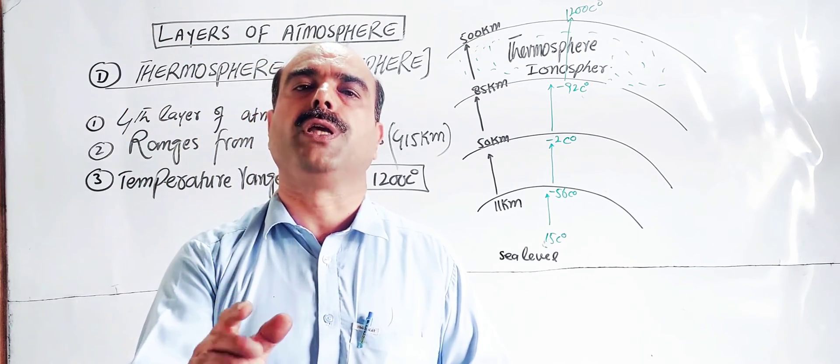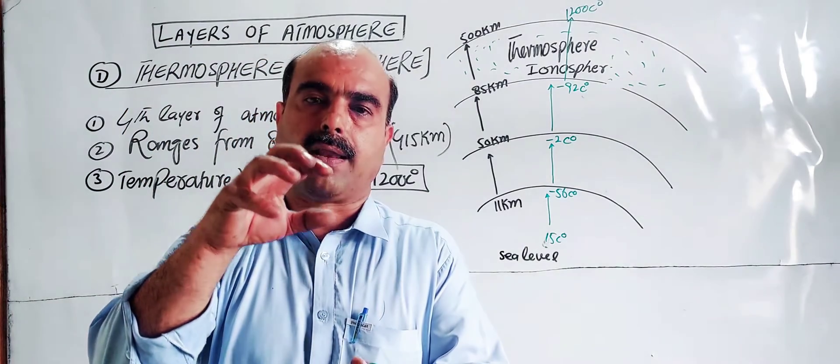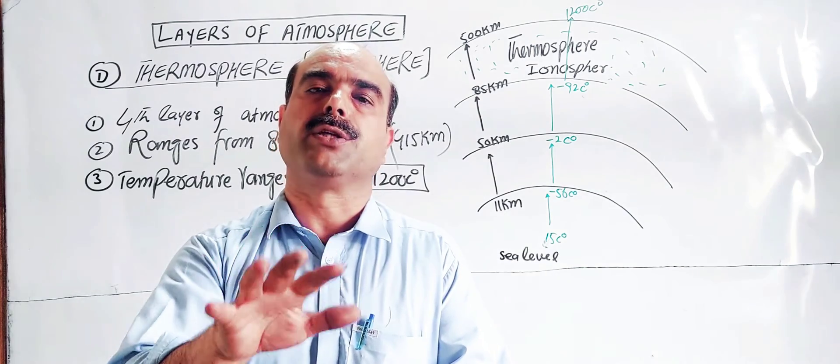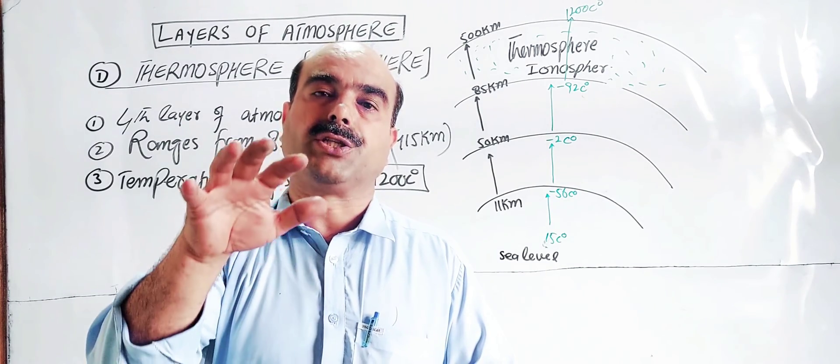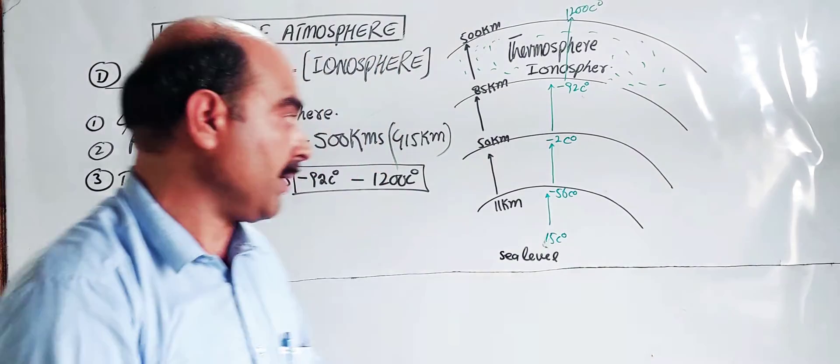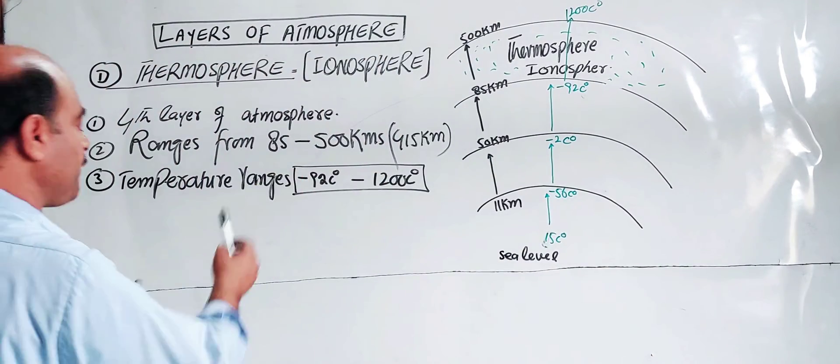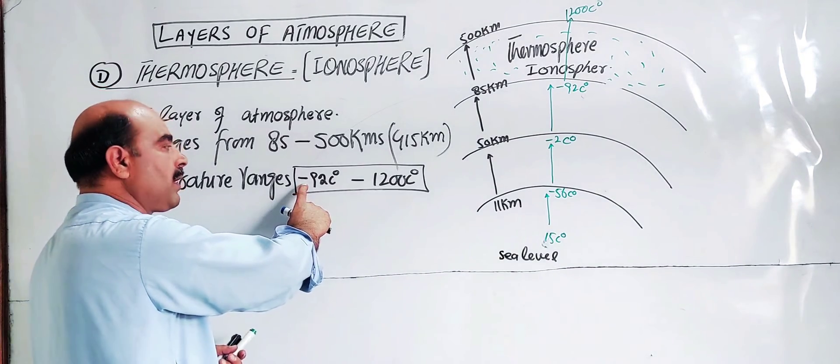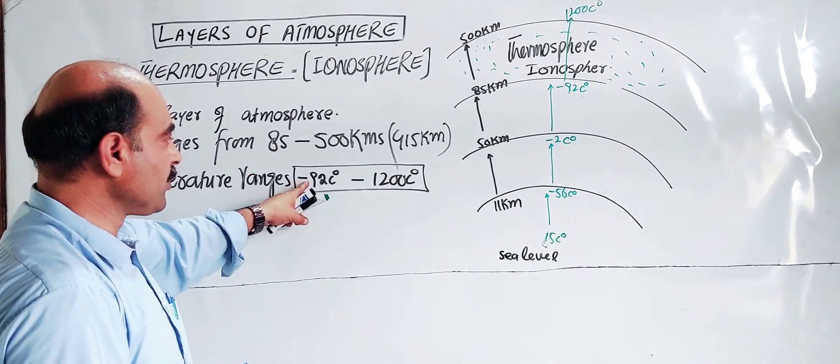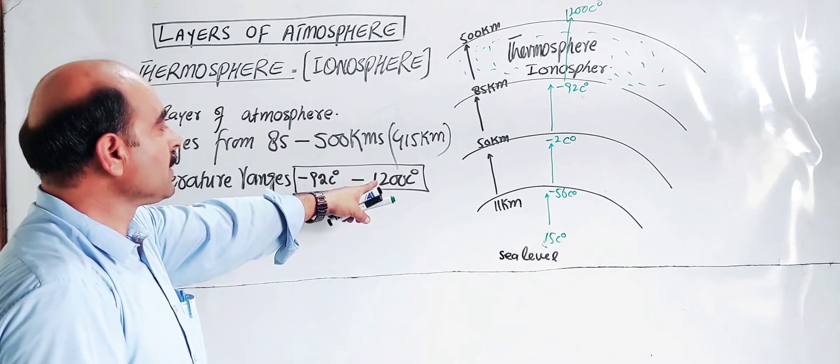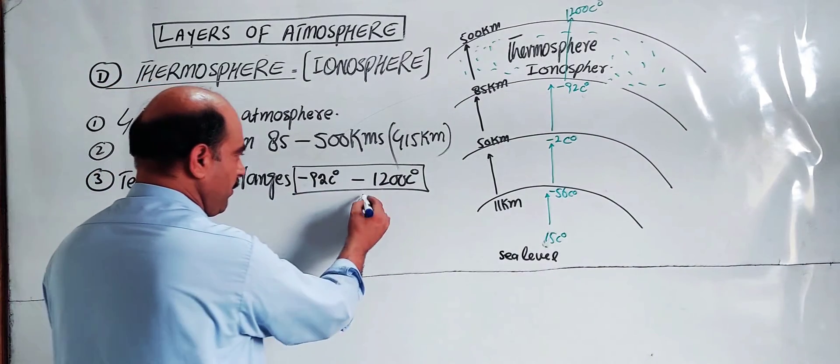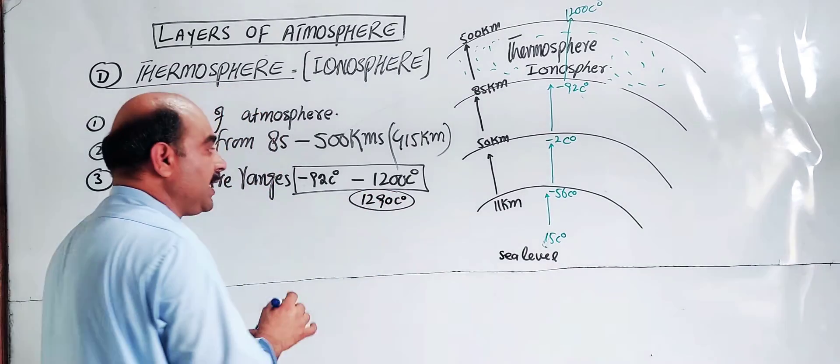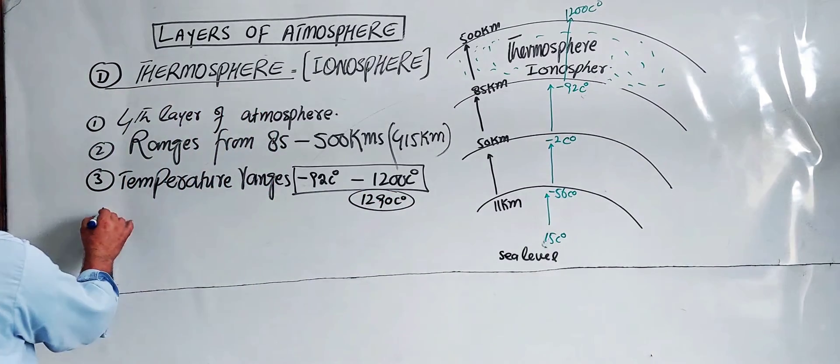Light absorbing species absorb the radiation and the temperature increases. The total temperature change is from minus 92 degrees C at the bottom to 1200 degrees C at the top, a total change of 1292 degrees C.